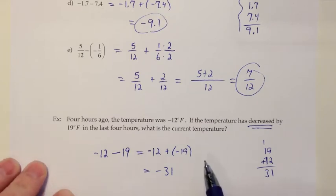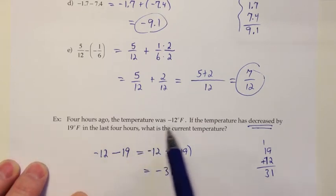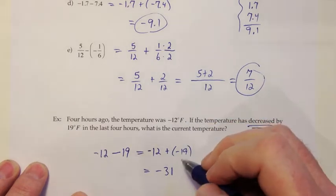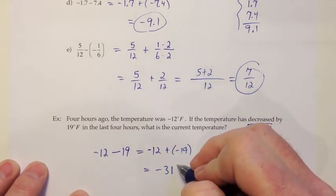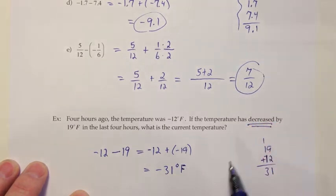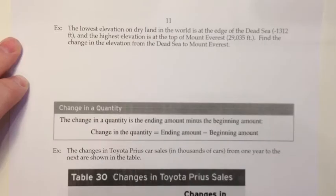And then this one's an application, so we don't just stop at the number. We have to do the units. And it looks like the units on the temperature was Fahrenheit. So what is the current temperature? Negative 31 degrees Fahrenheit. Bitter, bitter cold. And again, some scratch work over there. So I'll circle my answer here.